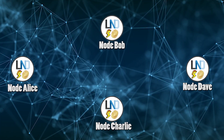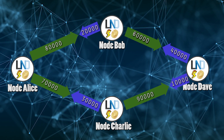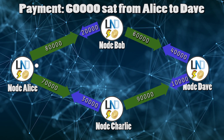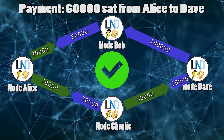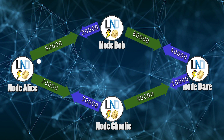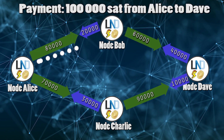Let's start from a normal type of payment — a single path payment. The transaction is routed through a series of channels with enough capacity to route the whole payment to the destination. In the scenario on the screen, sending 60,000 satoshis is possible as we have enough balances in all the channels on the path. But routing 100,000 satoshis would be impossible using this single path scenario.